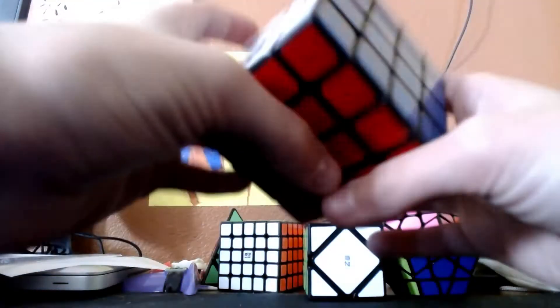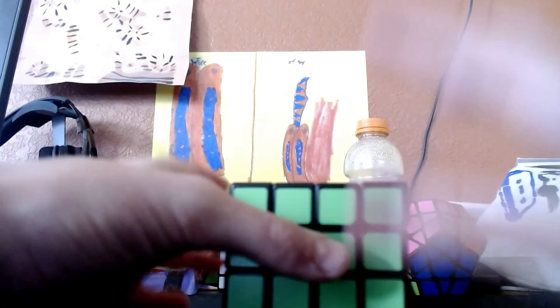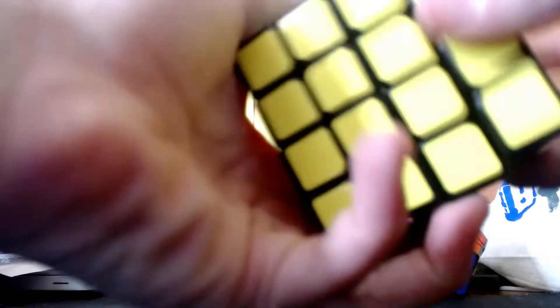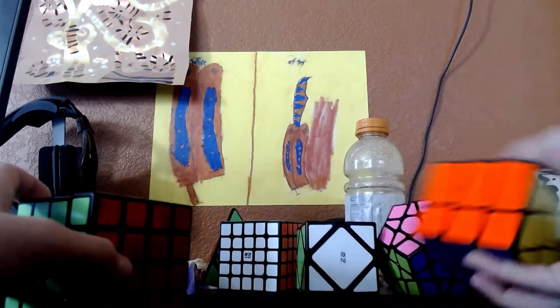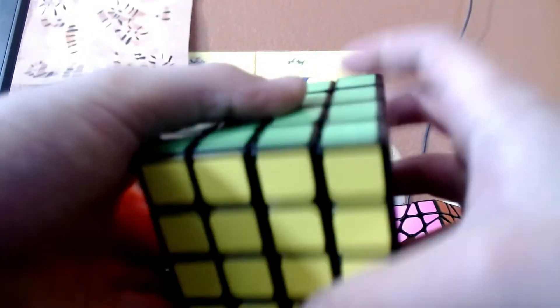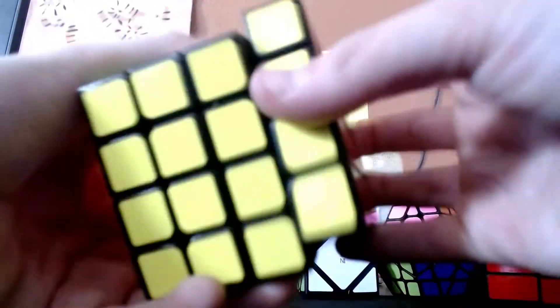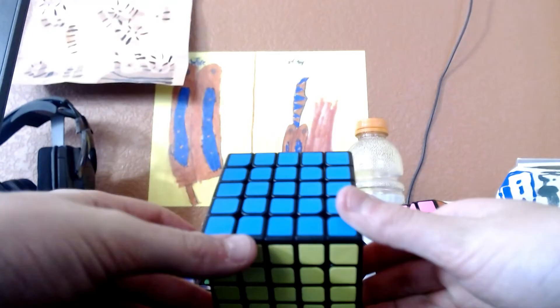Now we have my four by four, which I actually don't know how to solve. I'm definitely a beginner cuber. I will get there eventually with the four by four and five by five solves. Now we have a five by five, just like the four by four.